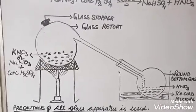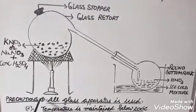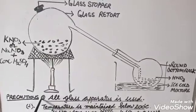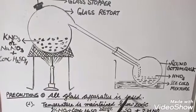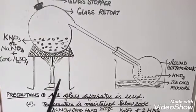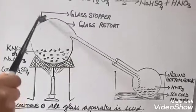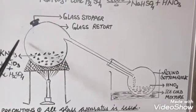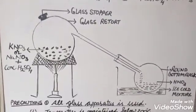While preparing nitric acid by this method, we need to follow certain precautions. First, an all-glass apparatus is used because nitric acid is highly corrosive. If we take rubber or wooden stoppers here, they will get corroded with nitric acid.